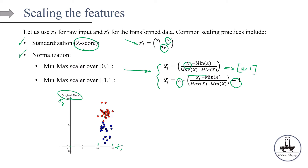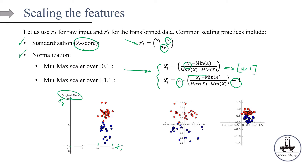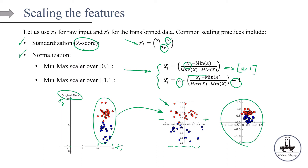I'll show you two pictures — think about which one is standardization and which is normalization. The one on the left shows a range that goes from negative to positive numbers, so that's standardization using the z-score formula. The one on the right is normalization — specifically a min-max scaler between 0 and 1, where everything is squeezed into that range.